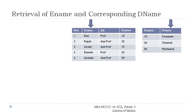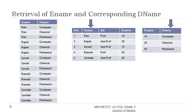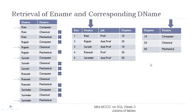To retrieve ename and their corresponding dename for all employees, the Cartesian product produces 15 records — but this is not the desired output. We actually require only five records. The output has 10 extra undesirable records. For example, Ram's department should be computer, not chemical or mechanical. Rajesh's department is chemical, not computer or mechanical. Suresh's department is computer, Ramesh's is chemical, and Surinder's is mechanical. So we need to select these five desired records from the set of 15.